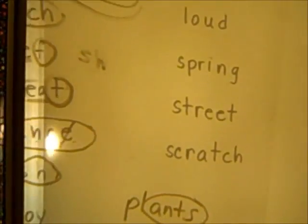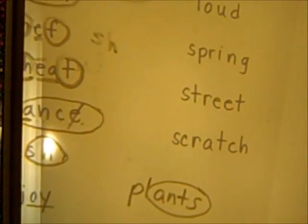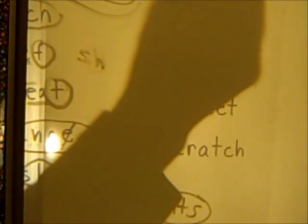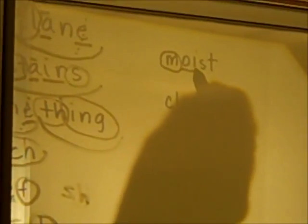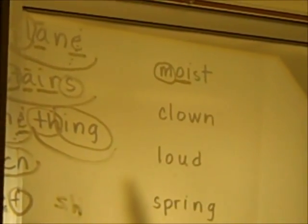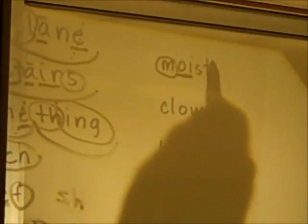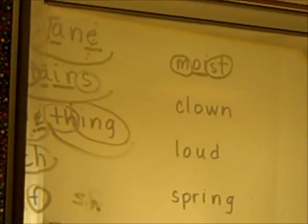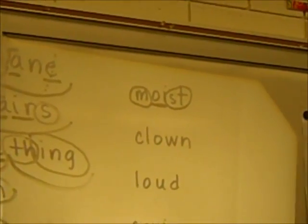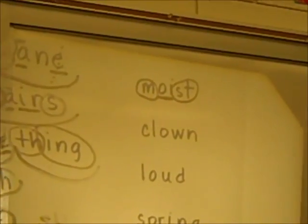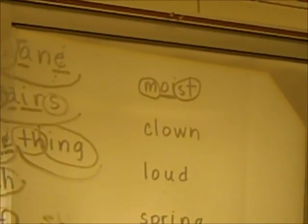And oy says O-I. So circle the M, underline the O-I — that's the oy. And circle the S-T. That's the ending blend. M-O-I-S-T.